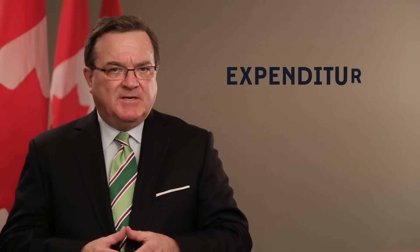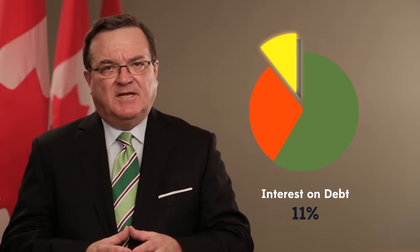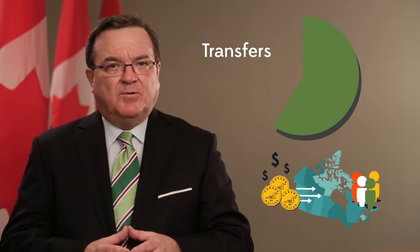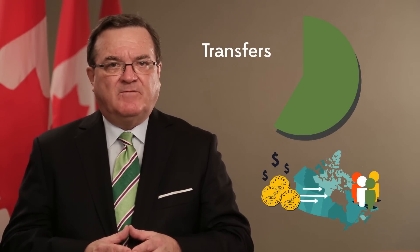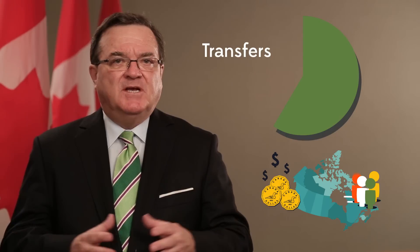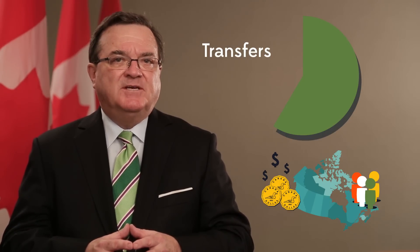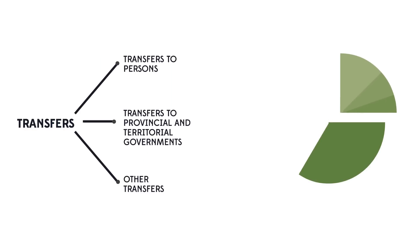Let's take a closer look at the federal government's expenditures. Our expenditures can be divided into three key areas: transfer payments, program expenses, and interest on our national debt. Payments that go directly to persons, provinces and territorial governments, and other organizations are called transfers. These transfer payments make up about 60% of this year's budget. Transfers can be organized into three groups.